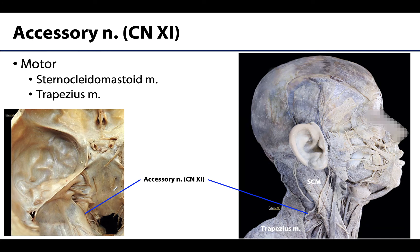The accessory nerve, cranial nerve XI — traditionally called the spinal accessory nerve — is entirely motor or efferent. It innervates two muscles we've already discussed: the sternocleidomastoid and the trapezius, and you can see it traveling between the two.